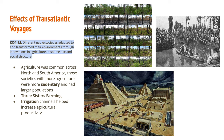The next key concept says different native societies adapted to and transformed their environments through innovations in agriculture, resource use, and social structure. One way Native Americans transformed their environment is through fire ecology — controlled burns in the forest. As native societies began to use agriculture more and more, they utilized Three Sisters Farming and became more sedentary, staying in one place. Another way they transformed their environment is through irrigation channels, such as the chinampas created in Tenochtitlan.